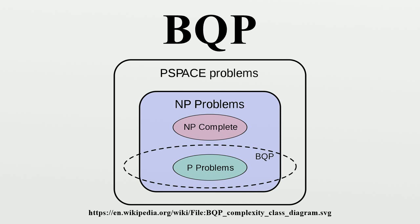detailed analysis shows that the complexity class is unchanged by allowing error as high as one half minus n to the minus c on the one hand, or requiring error as small as two to the minus n·c on the other hand, where c is any positive constant.